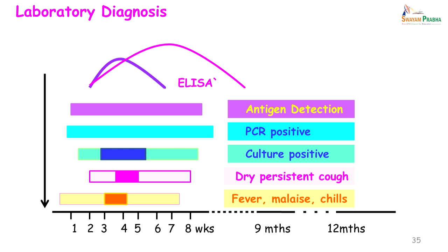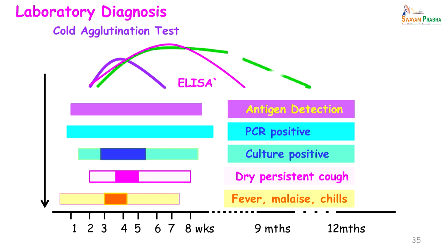Coming to the cold agglutination test: the antibodies start rising in the second week, peak somewhere in the third to fourth week, but drop more rapidly by about the seventh week. The complement fixation test shows a rise in antibody titer from the second week, with maximum levels found in week 5 to 7; these antibodies persist in the serum till almost 12 months.